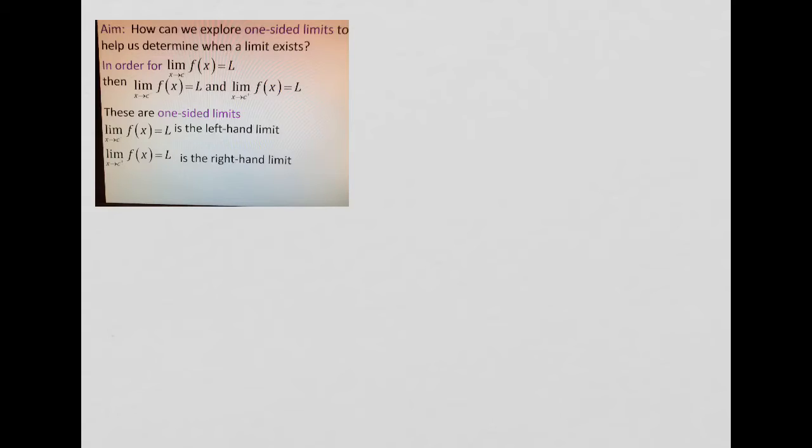So in order for that limit to have existed, write this down, then your one-sided limits were equal to that same number. This is very important. Not only were the two numbers the same, I'm just calling it alpha right now, but that they were numerical and the same.